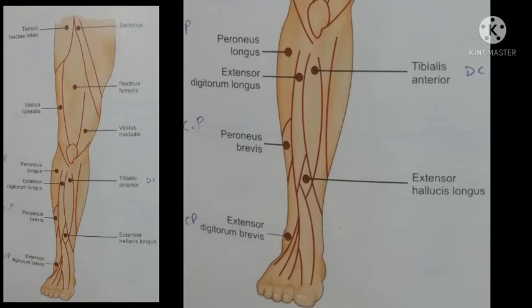Now to stimulate the muscles of the front of leg, the inactive electrode should be placed lateral to the knee, because the peroneal nerve passes from there. To stimulate the peroneus longus muscle, the pan electrode should be on lateral to the leg just below the knee. The action of peroneus longus is plantar flexion and eversion of foot.